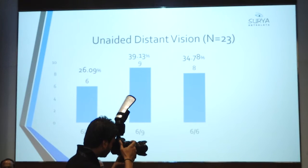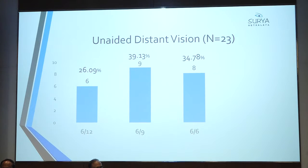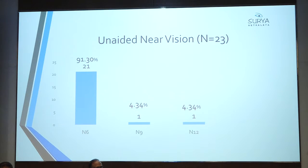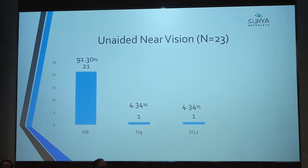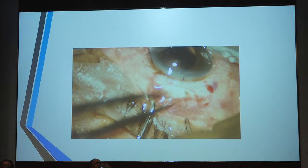Six patients had 6/12 unaided vision. Near vision was excellent in nearly all cases — only one patient had N9 and N12, but that patient had ARMD. Most patients likely achieve N5 or N4 since the chart only measures to N6. This is a forgiving lens — even with some refractive error the end result is very good, with no dysphotopsias. For SICS surgeons, just fold it slightly with forceps and implant without an injector.